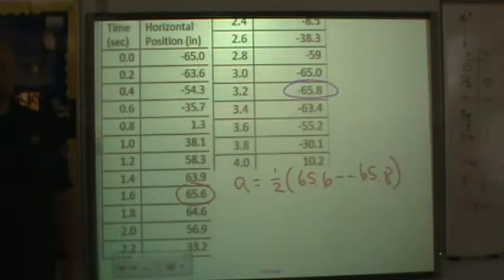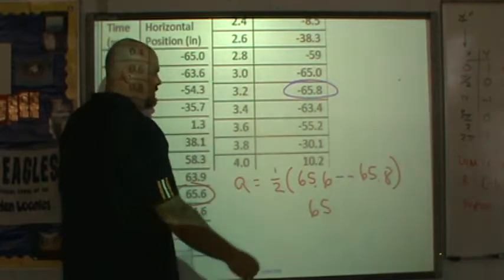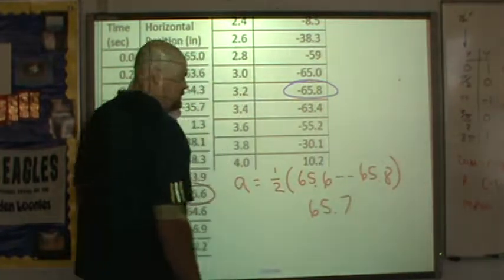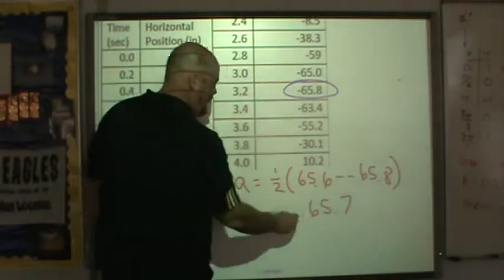The amplitude is half of the distance from the maximum point to the minimum point. And what do we get for that? 65.7? Is that right? 65.7? Yes? So we have our amplitude.